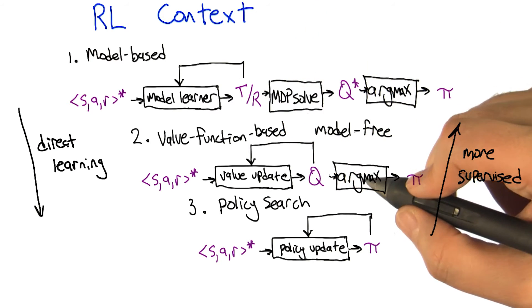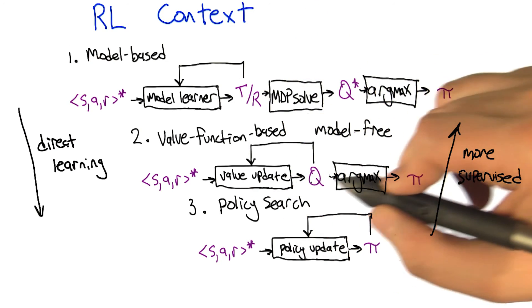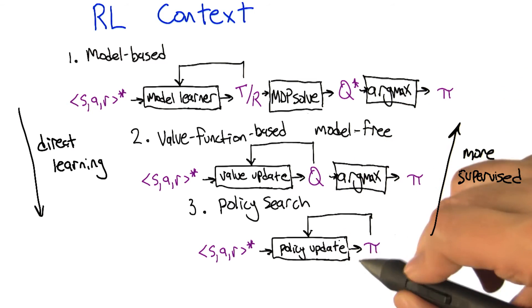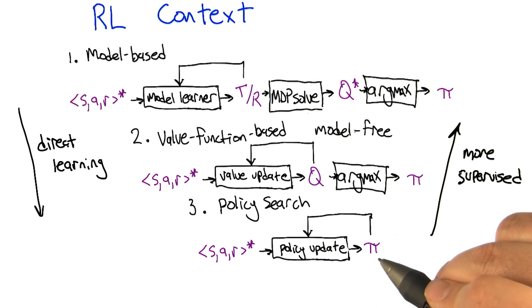It's basically a supervised learning problem. You get to see what the output's supposed to be. Here you don't quite get to see what the output's supposed to be, but you do get values that you could imagine propagating backwards. And here you get very little useful feedback in terms of how to change your policy to make it better.